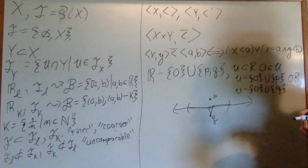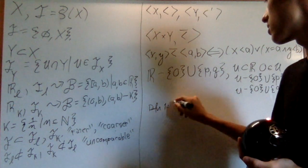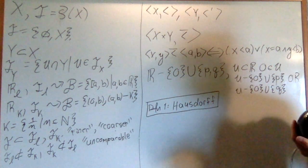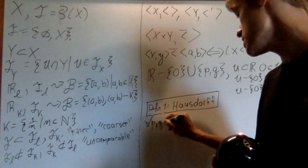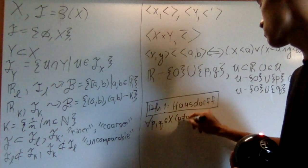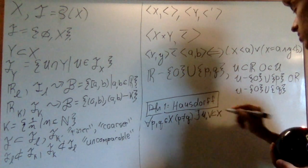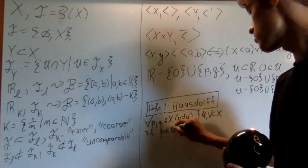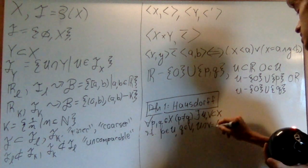If you remember my order topology video, you'd remember a property I called Hausdorff. Let's give the definition of Hausdorff first. I introduced this concept with the order topology. Basically, what it says is that for any two points, p and q, an element of X, that are not equal to each other, so p is not equal to q, there exists two open sets, U and V of X, such that p is an element of U, q is an element of V, and they are disjoint. So U intersect V is empty.